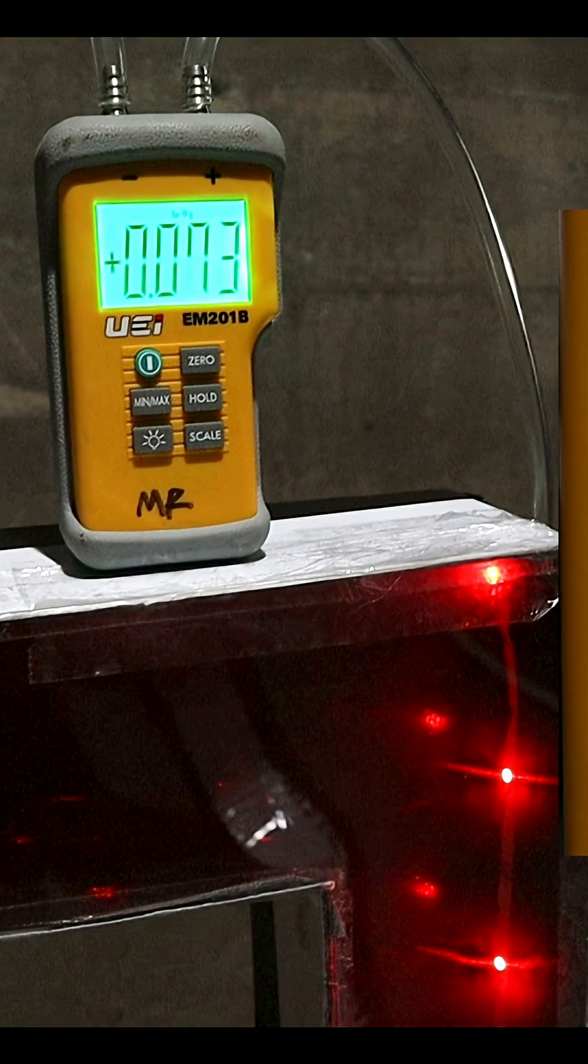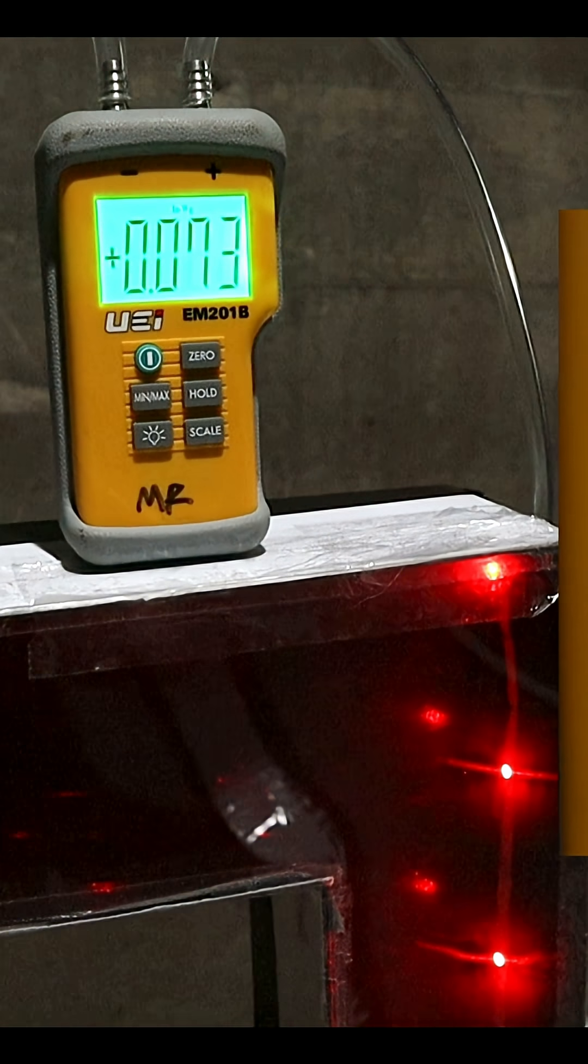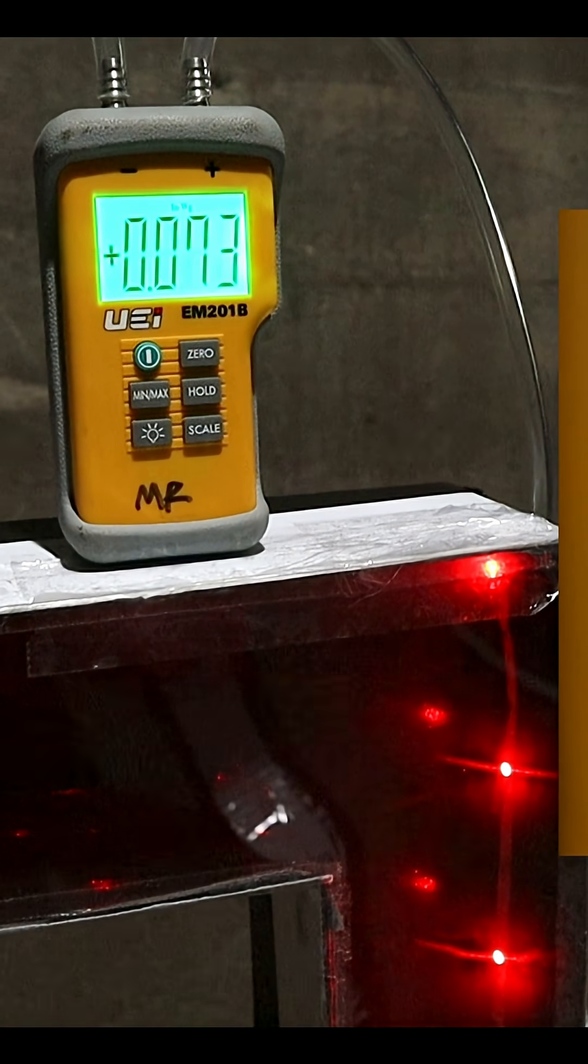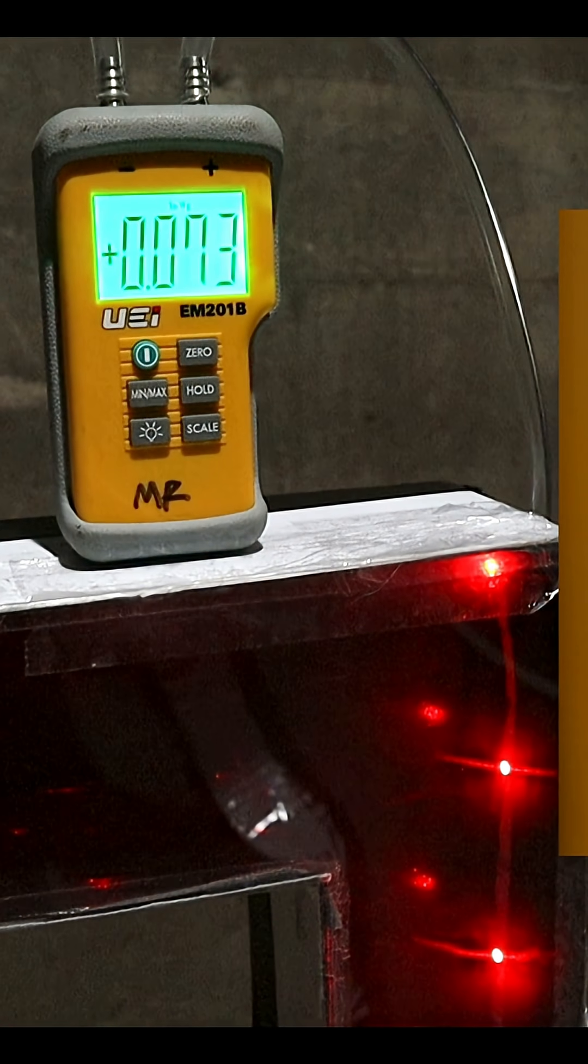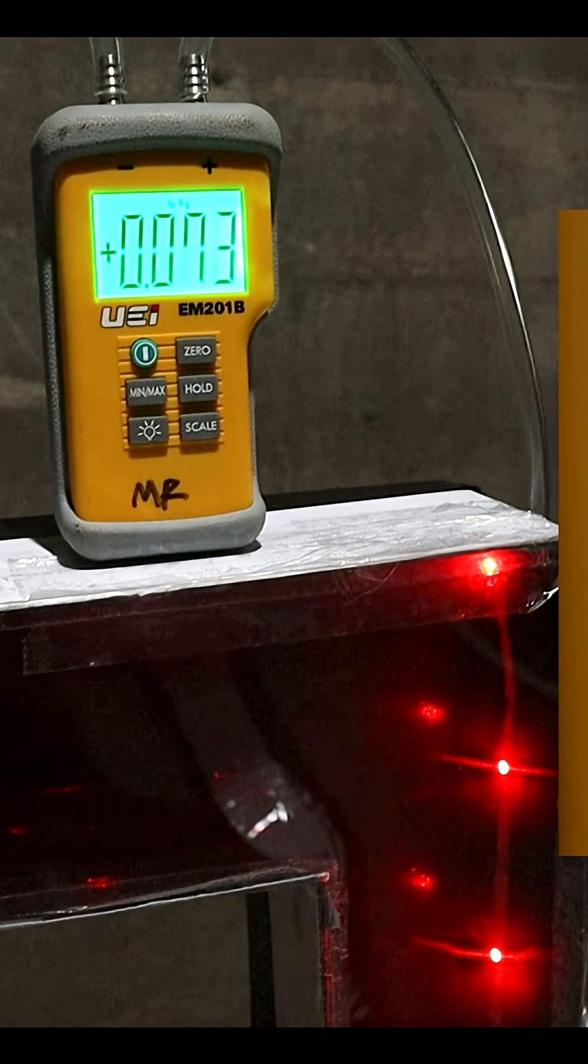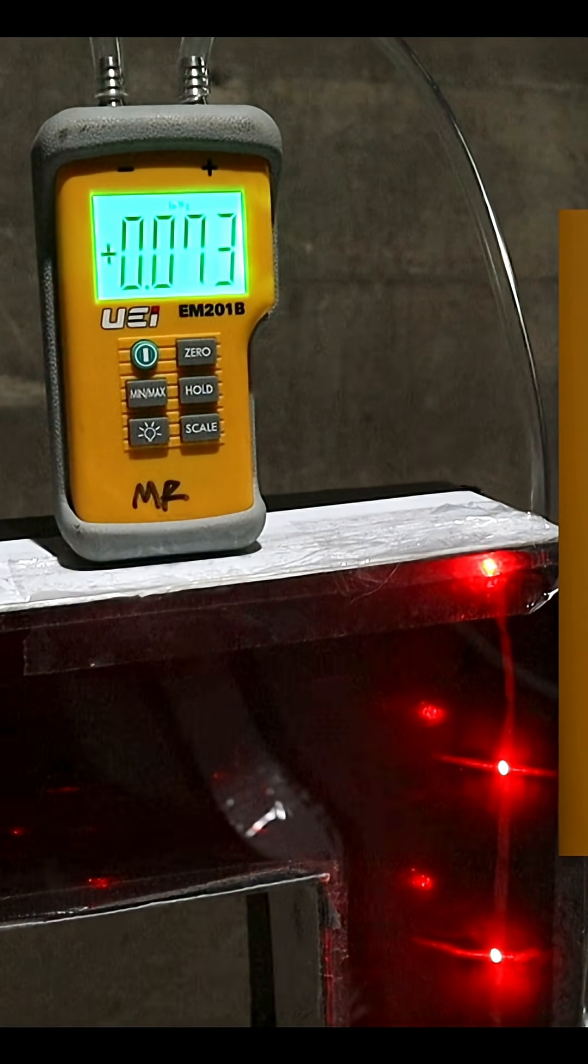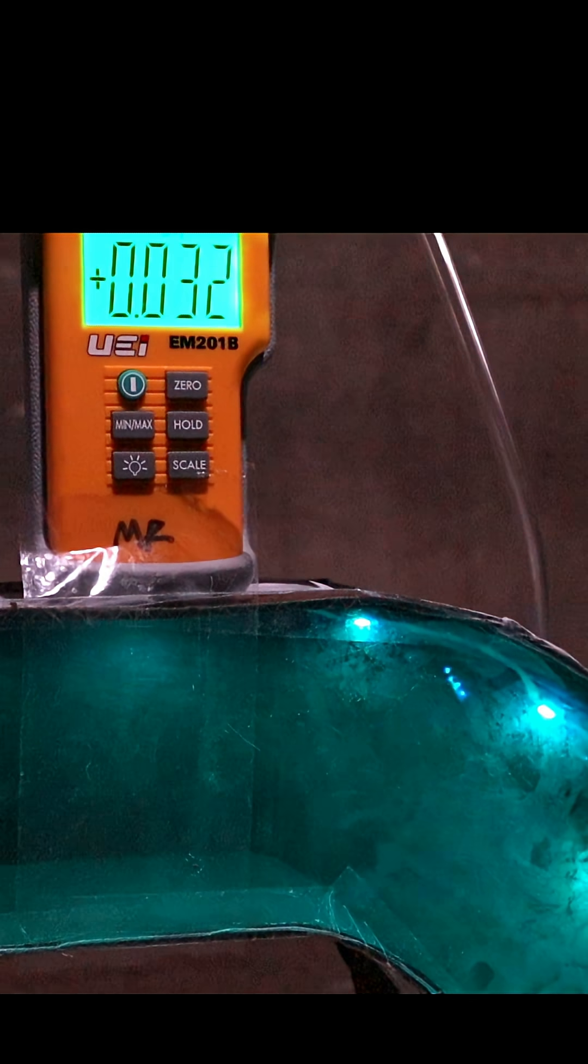So a manometer, for example, on that hard 90 we're reading 0.073 inches of water column and our CFM airflow out of that duct is about 120-125 CFMs. On our soft radius 90 we have...